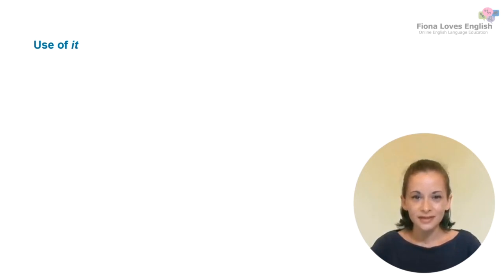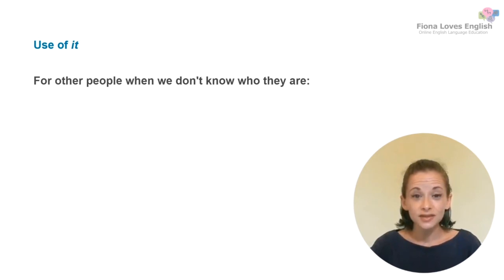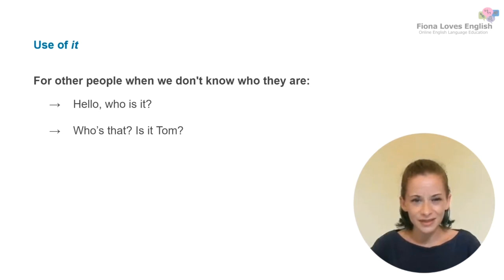Although 'it' is usually used to talk about things and animals, it can also be used to refer to people. We can use 'it' to refer to other people when we don't know who they are. When we answer the phone, we might say hello and ask 'Who is it?' Here, 'it' is referring to the person speaking, but we don't yet know who they are. You might also ask 'Who's that? Is it Tom?'